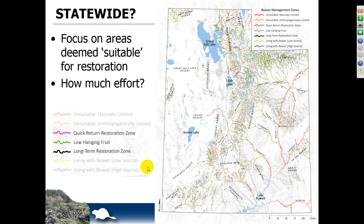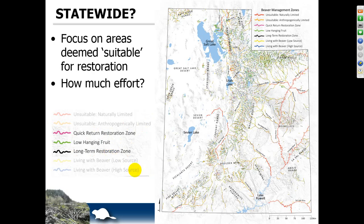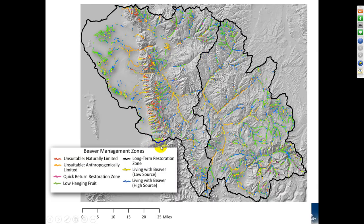The worst of these would be mimicking beaver dam impacts with BDAs and just artificially maintaining it — trying to do this without beaver — but we'll never do as good a job. We can see quick geomorphic and hydrologic impacts, but we're never going to spend as much time on site maintaining it as these little guys. If we take those principles and look statewide and focus on quick return restoration — low-hanging fruit — we're focusing on areas where we can just relocate them and they work. Quick return may need a minor change in land management or riparian recovery. Long-term restoration may require something like beaver dam analogs.